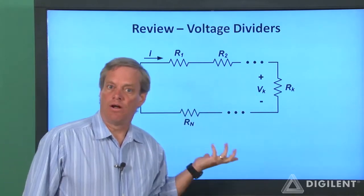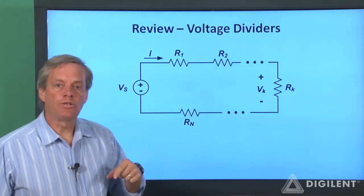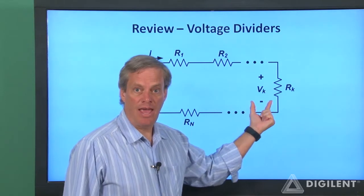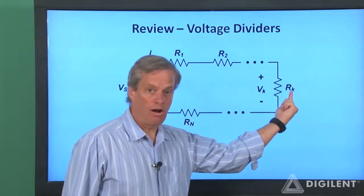These elements are all in series because they all have the same current. We're interested in finding the voltage difference, V sub K, across the K-th resistance, R sub K.